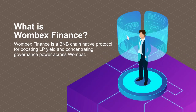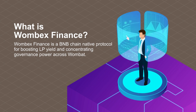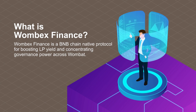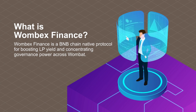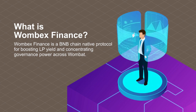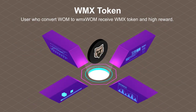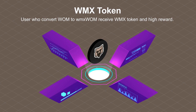Wombex Finance is a BNB chain native protocol for boosting LP yield and concentrating governance power across Wombat. It is both a yield aggregation and VE token accumulation platform built on top of Wombat. The team behind Wombex consists of eight professionals who contributed to numerous DeFi projects on Ethereum and other chains. Users who convert WOM to WMXWOM receive WMX tokens and high rewards, with 2% of the WMX total supply distributed to WMXWOM stakers over the first two weeks on a block-by-block basis.